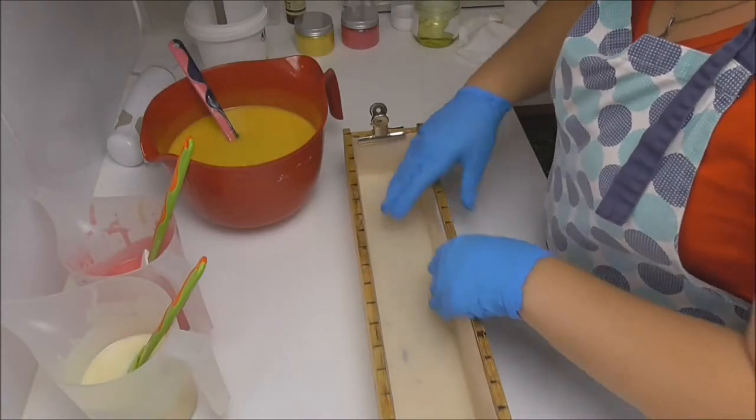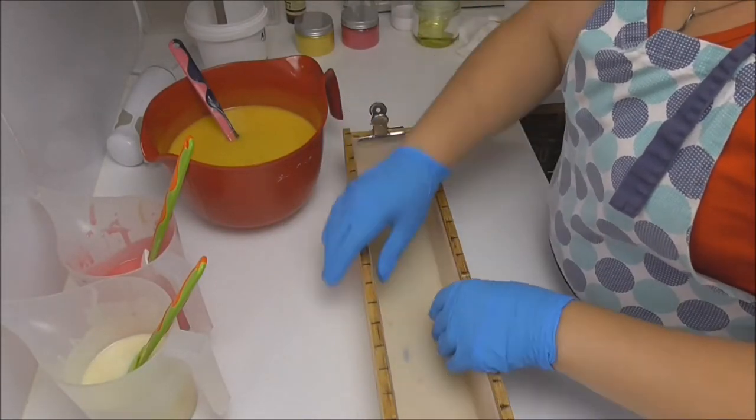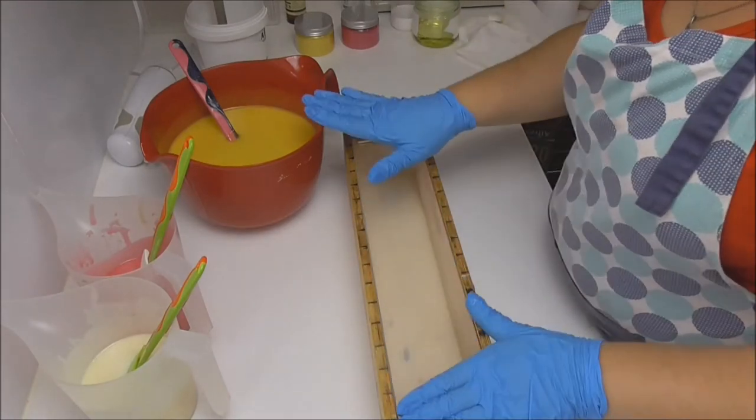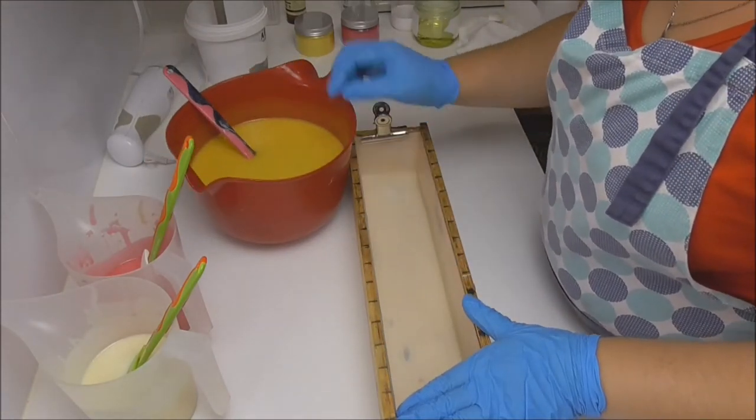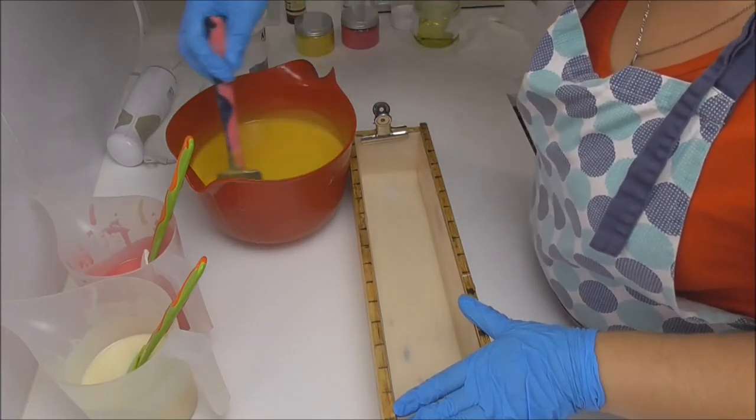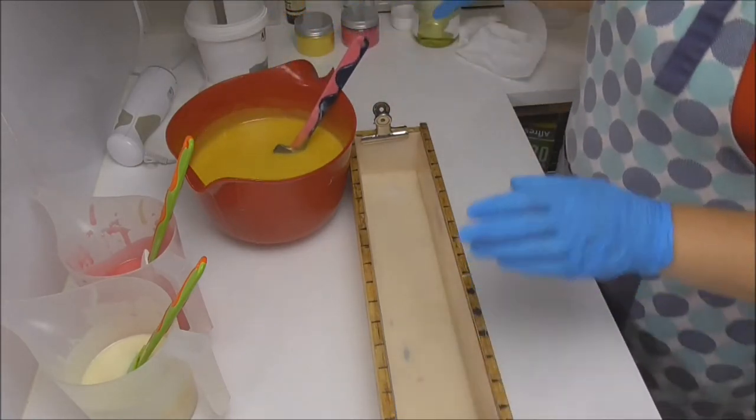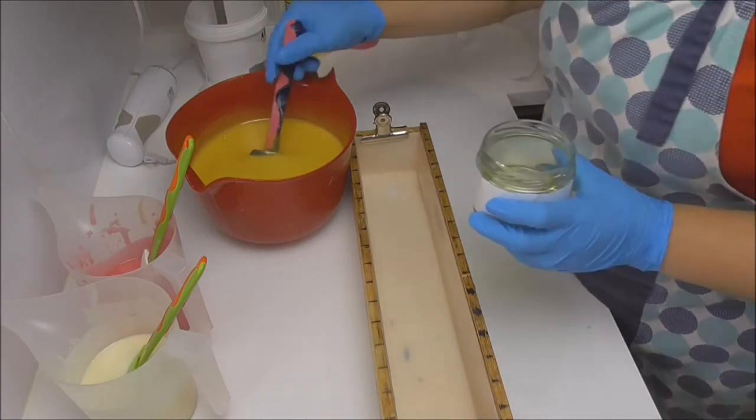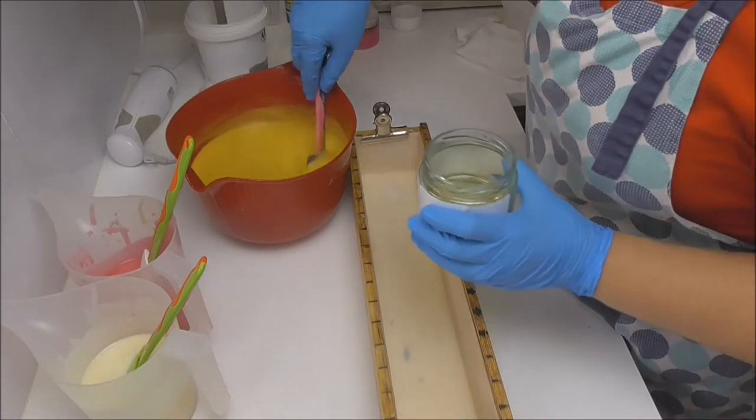I'm going to bring the mold in now just in case anything does happen once I add this fragrance oil. This looks like a bit of a mustard yellow at the moment, but it does actually tone down a little bit once it's all saponified. I'm going to add some of my fragrance oil into the yellow and pour it in, and we'll see what happens before adding in the pink and the white.